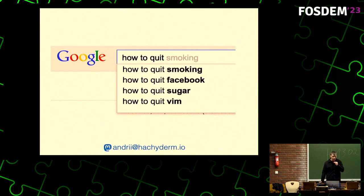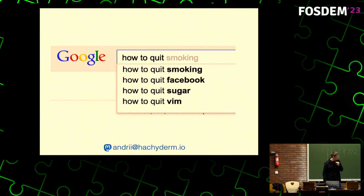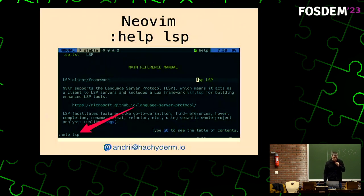And since version 0.5, as you know, Neovim supports an LSP client framework. This means Neovim can work as a client to LSP servers like rust-analyzer and other tools. To prove my words — if you open Neovim and type ':help lsp', it's right inside the editor, which is nice, and you can read what you can do.